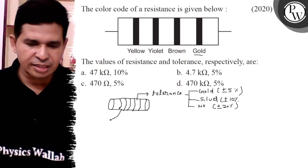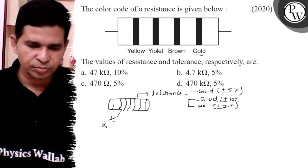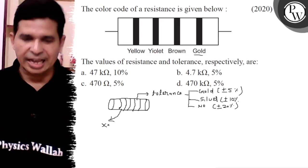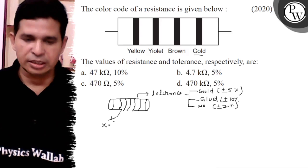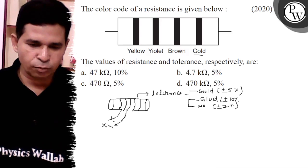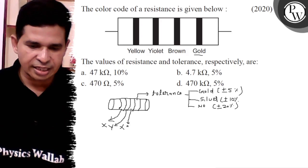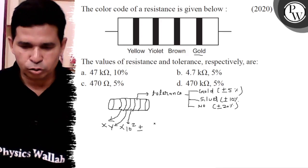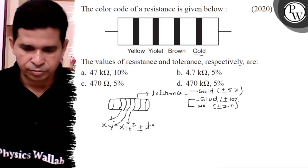Now, first ring indicates the tenth digit of value, let its score is X, then it is the tenth digit of value of resistance. It is the unit place Y and third indicate the ten to the power Z and plus minus allowance, your tolerance. It is the value.